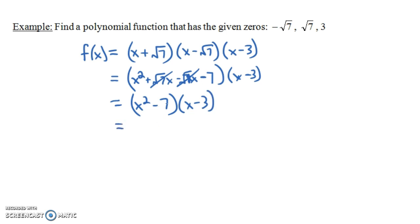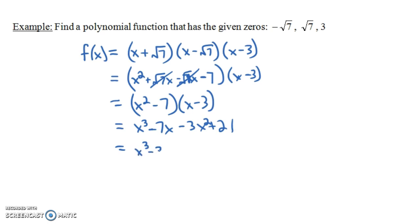Now we multiply (x² - 7)(x - 3). Taking x times each term gives x³ - 7x. Taking -3 times each term gives -3x² + 21. Writing in descending order: x³ - 3x² - 7x + 21. That's our final answer.